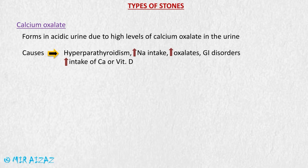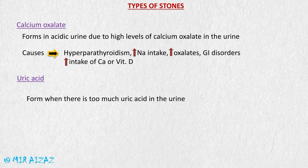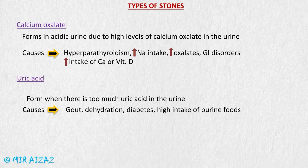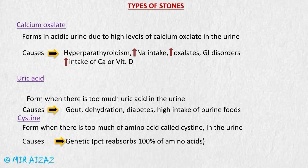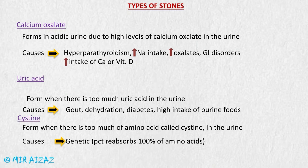The second type is uric acid stones, which form in patients with too much uric acid in their urine — such as patients with gout, dehydration, diabetes, or high purine food intake. The third type is cysteine stones, which form when there is too much of the amino acid cysteine in the urine. Normally, the proximal convoluted tubule reabsorbs 100% of amino acids from the glomerular filtrate, but when this fails, cysteine concentration rises in the urine, predisposing the patient to cysteine stone formation.